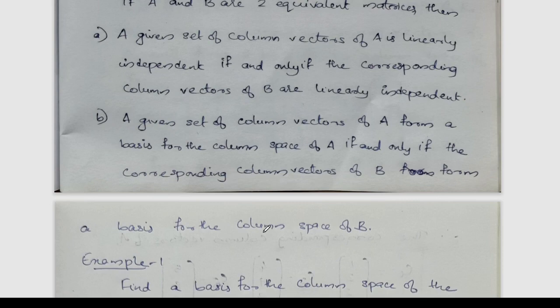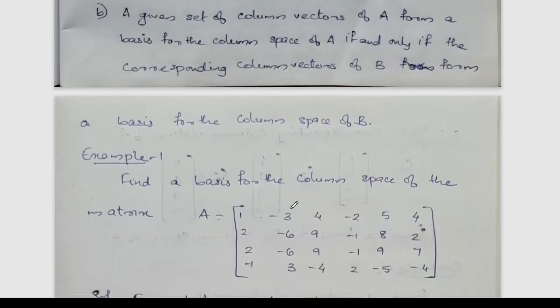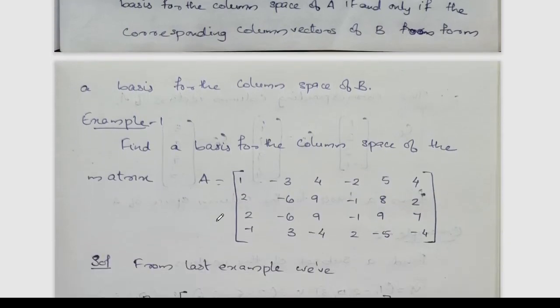Find a basis for the column space of matrix A equal to: first row 1, -3, 4, -2, 5, 4; second row 2, -6, 9, -1, 8, 2; third row 2, -6, 9, -1, 9, 7; fourth row -1, 3, -4, 2, -5, -4. We will row reduce this matrix to find the pivot columns.